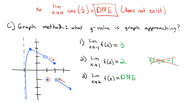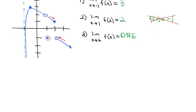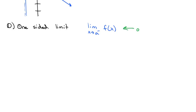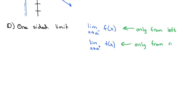This sets up the idea of a one-sided limit. We write the limit as x approaches a with a little negative superscript to mean we're only coming from the left side. If we want the limit from the right, we use a positive superscript. The negative superscript means coming from the left (the negative side of the number line), and the positive superscript means coming from the right.